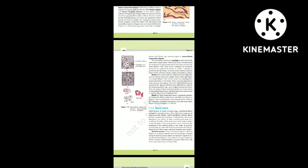Skeletal muscle tissue is closely attached to skeletal bones. In a typical muscle such as the biceps, striated (striped) skeletal muscle fibers are bundled together in a parallel fashion. A sheath of tough connective tissue encloses several bundles of muscle fibers. You will learn more about this in chapter 20.